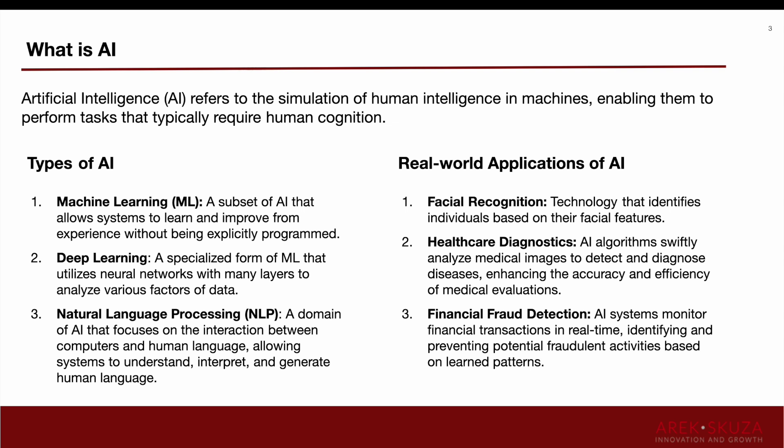So, what is AI? Artificial Intelligence refers to the simulation of human intelligence in machines, enabling them to perform tasks that typically require human cognition. A subset of AI is machine learning, which allows systems to learn and improve from experience without being explicitly programmed. Another example is deep learning, a specialized form of machine learning that utilizes neural networks with many layers to analyze various factors of data. And then, most famously, there is natural language processing — a domain of AI that focuses on interaction between computers and human language.